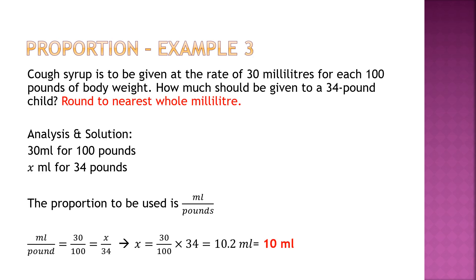Cough syrup is given at the rate of 30 ml for each 100 pounds of body weight. How much should be given to a 34-pound child? We use ml over pounds: 30 over 100 equals x over 34. Cross-multiply to find the answer. Using the shortcut method: 34 divided by 100 — dividing pounds by pounds — then times 30. You will get the answer.